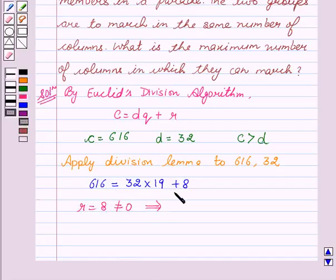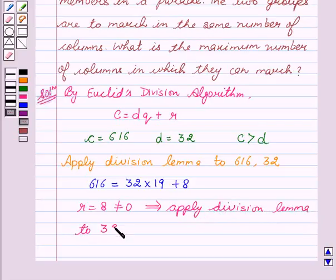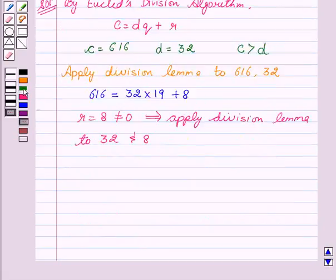This implies that we will apply division lemma to 32 and 8. We get when 32 is divided by 8, we get 4 as the quotient and 0 as the remainder.